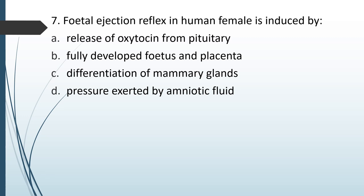Fetal ejection reflex in human female is induced by: (A) release of oxytocin from pituitary; (B) fully developed fetus and placenta; (C) differentiation of mammary gland; (D) pressure exerted by amniotic fluid. The correct answer is option B — it is initiated by fully developed fetus and placenta, carried out via release of oxytocin from pituitary, but initiated by fully developed fetus and placenta.